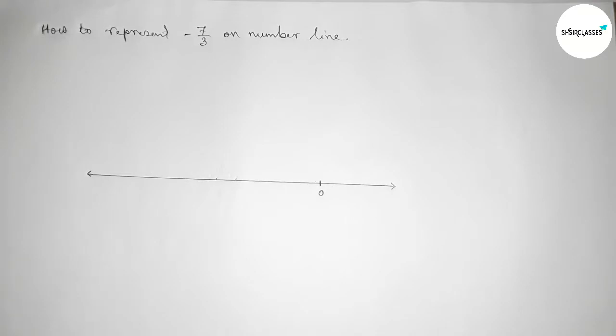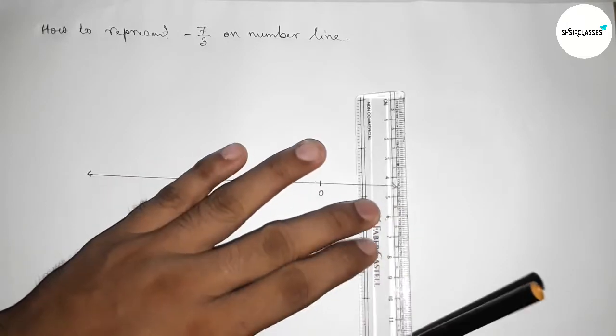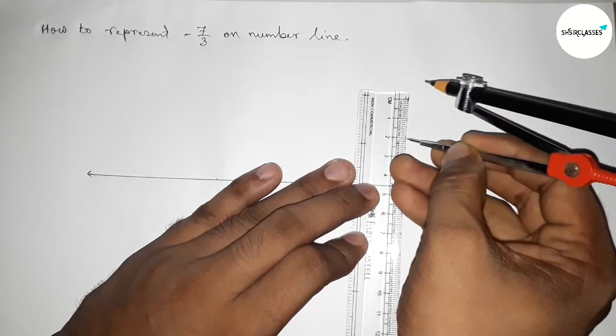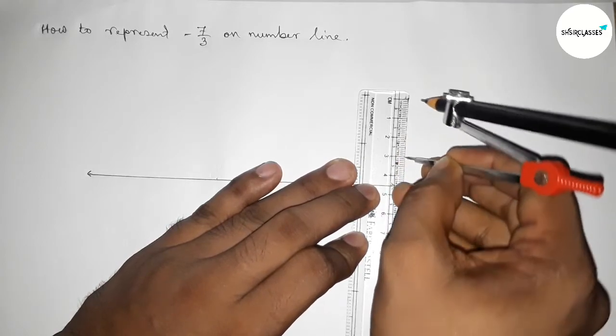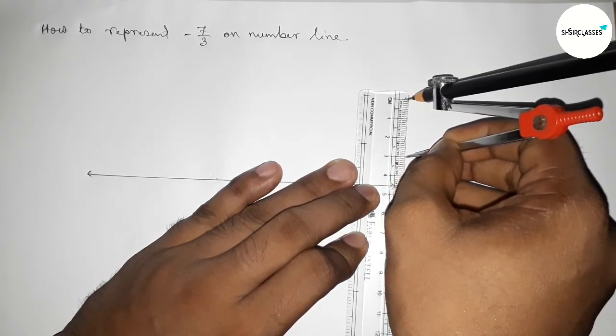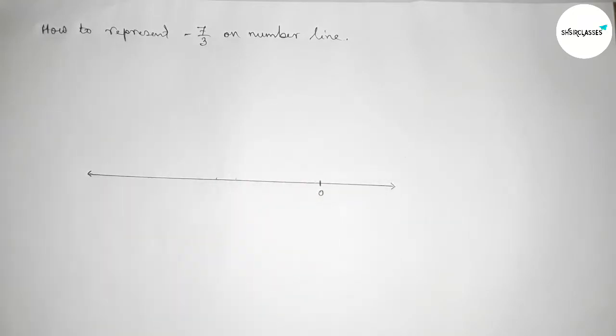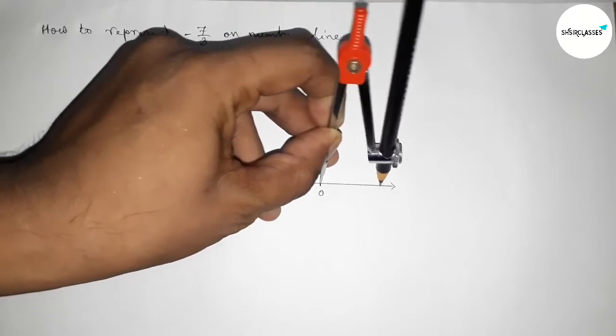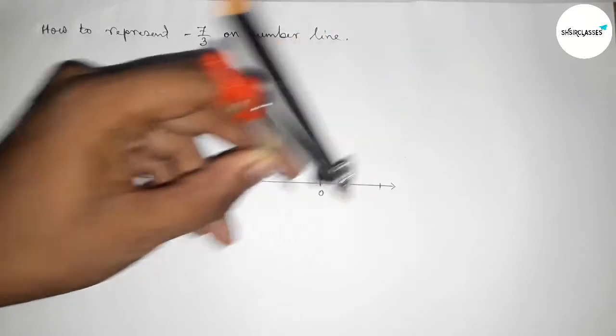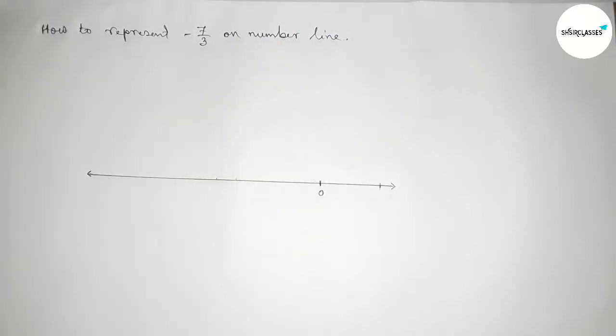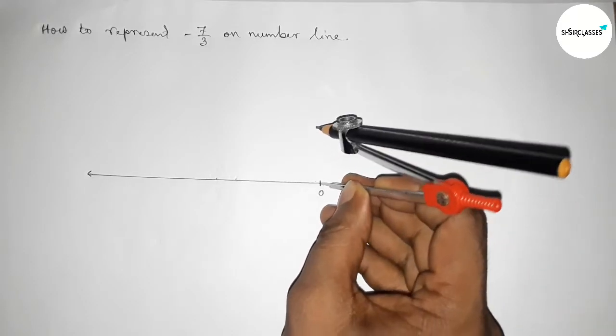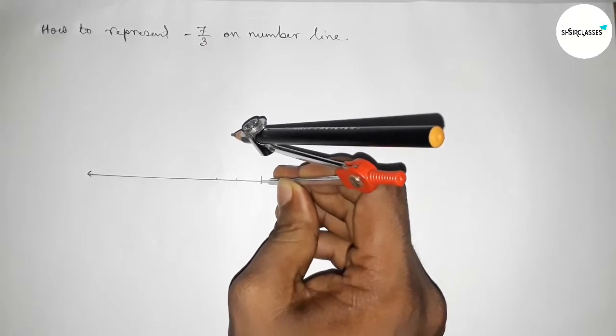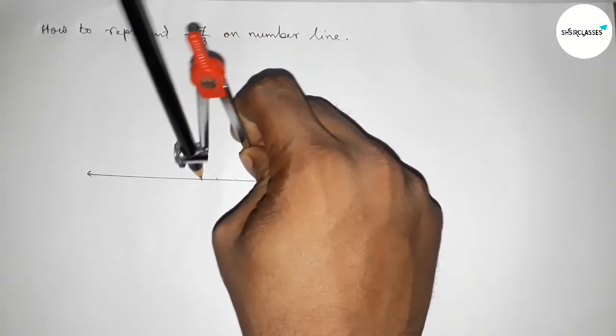I'm going to take a length of 3 centimeters using a scale. You can take any length using a compass. Put the compass here and mark here with the same length, then put the compass here and mark here. By this way, we construct a number line.